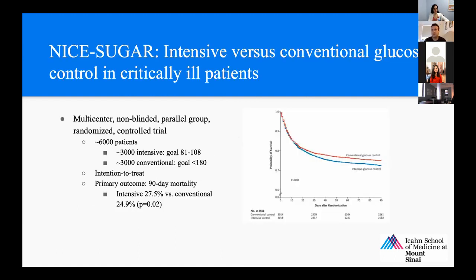The NICE Sugar Study was an intensive versus conventional glucose control study in critically ill patients — a multi-center, non-blinded, randomized controlled trial of about 6,000 patients. They were divided into two groups: an intensive control group with a goal of 81 to 108 blood sugar, and a conventional group with a goal of less than 180. The primary outcome was 90-day mortality. The intensive group actually had significantly higher 90-day mortality than the conventional group, about 2.6% higher. This is why we choose the 140 to 180 goal, especially in our critically ill patients.